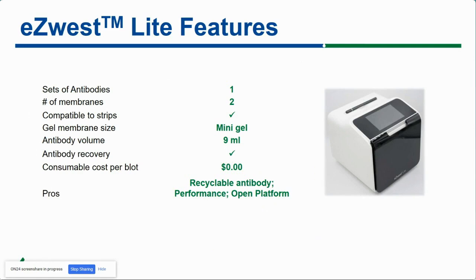Here are some more detailed numbers. This device will take one set of antibodies — one primary antibody and one secondary antibody — but it can process two membranes at the same time. You place both of them in the cassette and process them simultaneously. You can also use strips if you want to cut your membrane into smaller pieces. The device fits mini gels; a MIDI cassette is coming soon. For antibody volumes, for primary and secondary, you need about nine mils of diluted antibody, and then you can recover them.